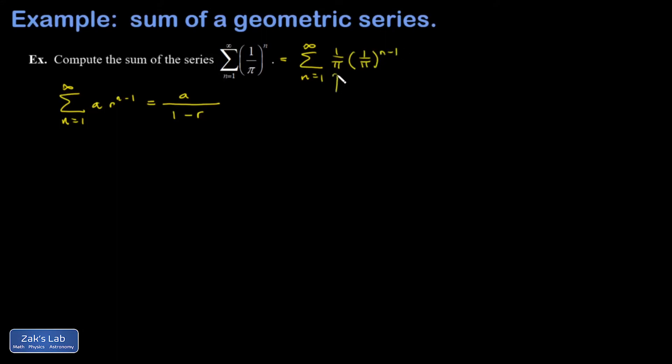Now I can easily identify what a is and so the sum of this thing is going to be 1 over pi that's a over 1 minus 1 over pi.